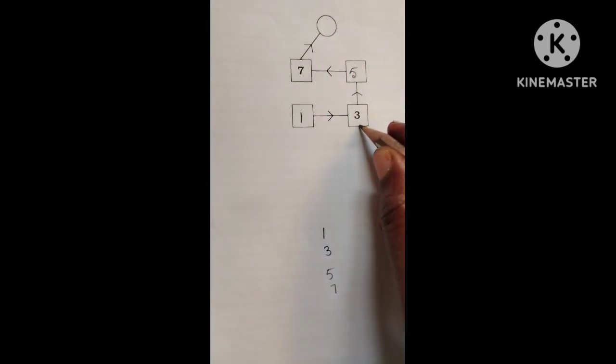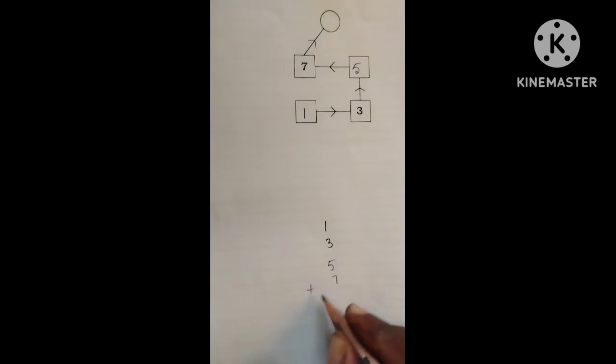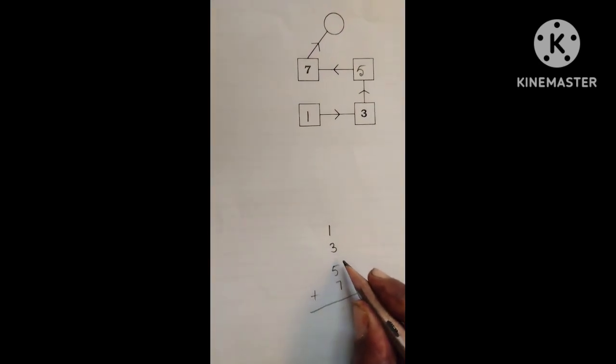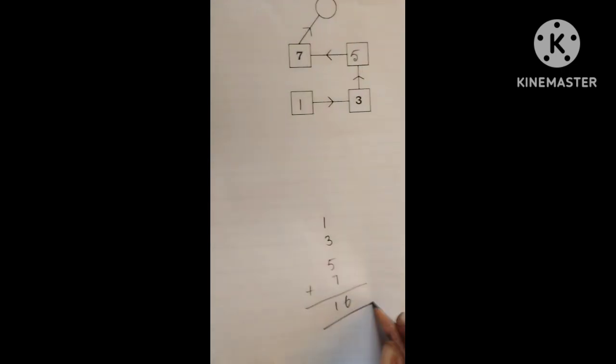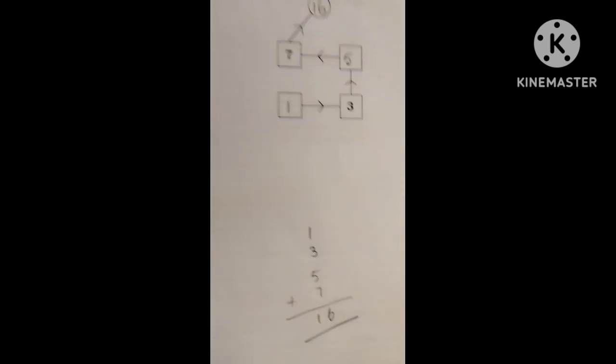Now, you want to add 1, 3, 5, 7. Add now. 7 plus 3, 10. 10 plus 5, 15. 15 plus 1, 16. Now, answer is 16. You want to write in a circle.